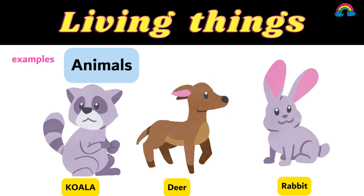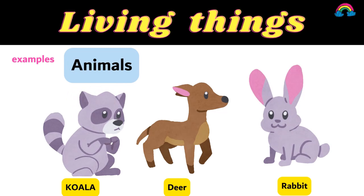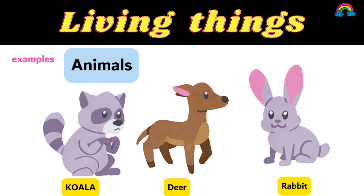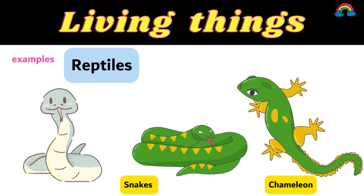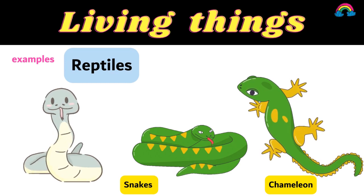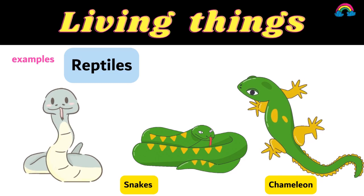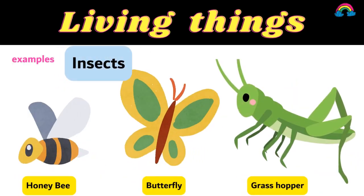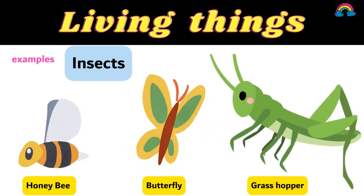All animals are living things — for example, koala, deer, rabbit, giraffe, and more. All reptiles are living things, like snakes, chameleons, and lizards. All insects are living things, like honeybees, butterflies, and grasshoppers.